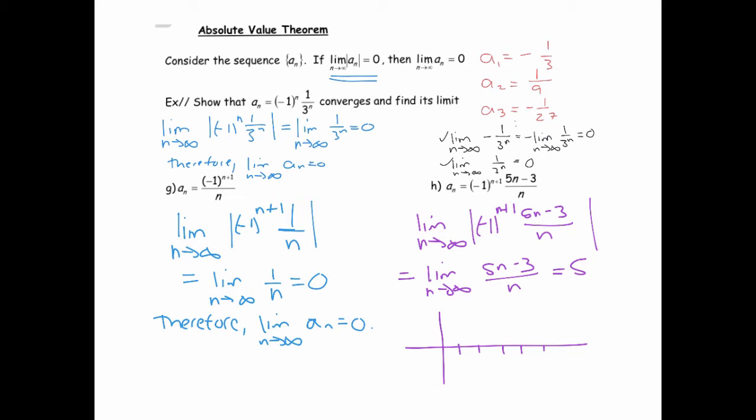When you plug in two, you get a negative. Five times two minus three is seven over two, which is 3.5, so you get -3.5. When you plug in three, you get a positive 4. And when you plug in four, you get a negative 17/4, which is a little more than 4. Ultimately what you can see is that half the time the terms are going to positive 5 and the other half of the time they're going to negative 5.